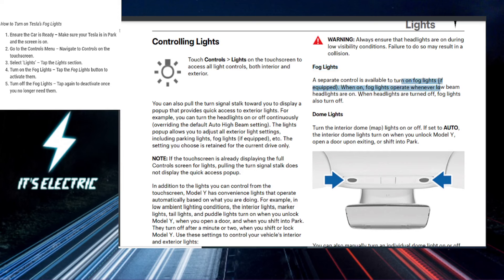I've added an outline at the top left of the steps. First things first, you want to make sure that your car is ready. To actually activate the fog lights, you'll need to make sure that the car is in park and the screen is active. Simply open the door and the screen will wake up from sleep mode.